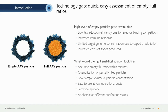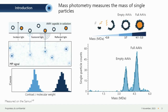A major reason for the high amount of empty particles, even at the manufacturing level, is the lack of a technology to rapidly and easily determine the ratio between empty and full AAV particles, specifically during early process development. The right analytical solution should be accurate, determine empty/full ratios within minutes, quantify partially or overfilled AAV particles, require low sample volume and concentration, be easy to use at low operational costs, be serotype agnostic, and be applicable at different purification stages.